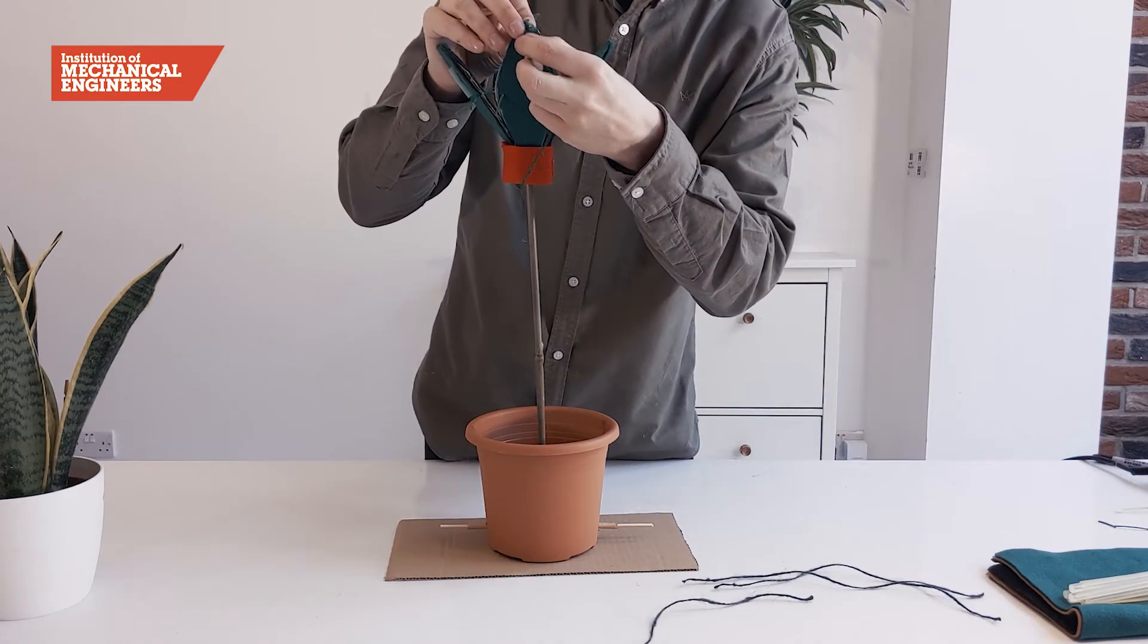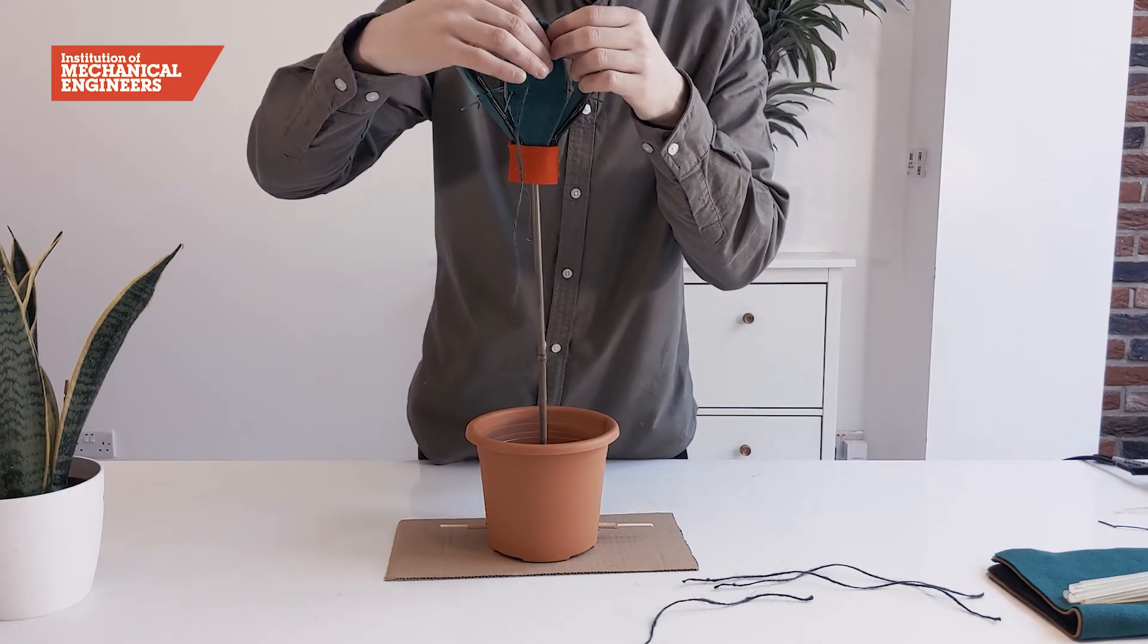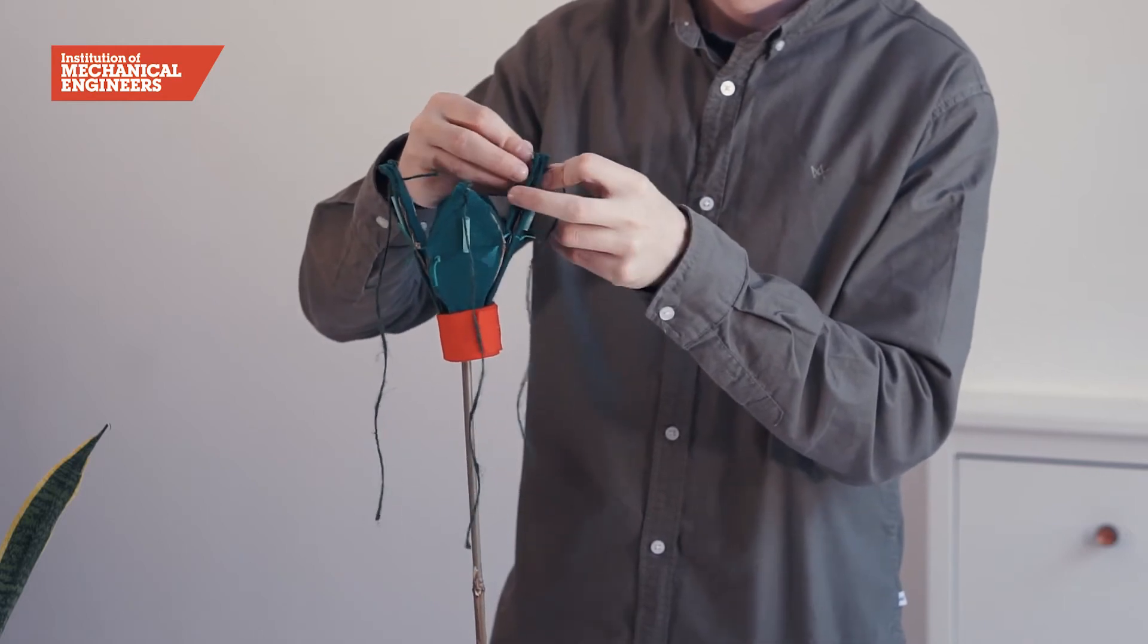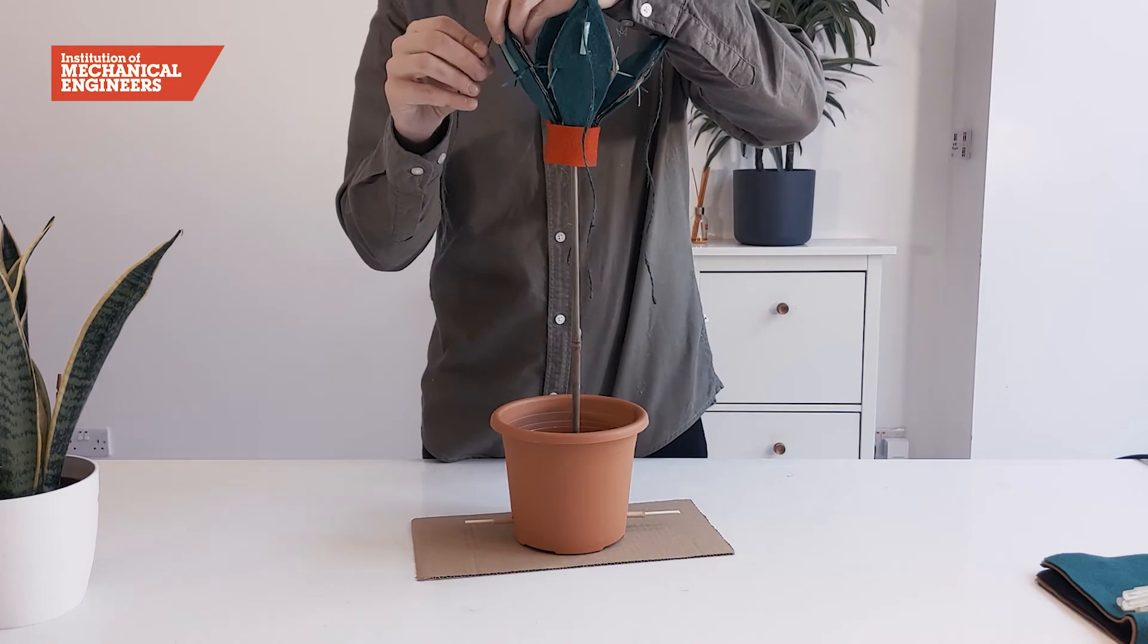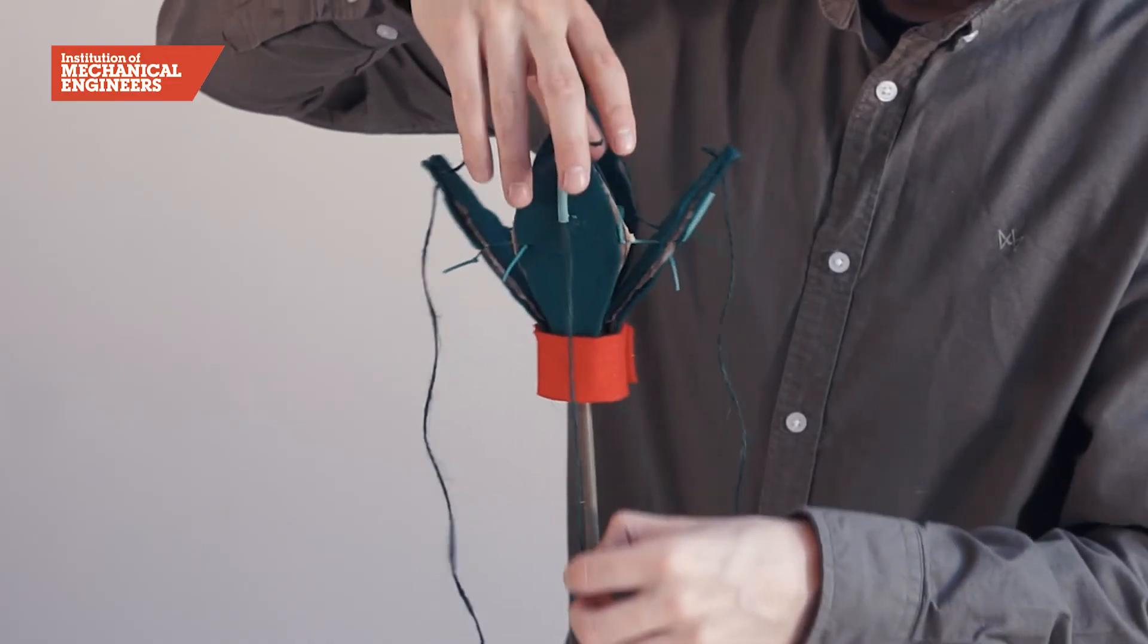To begin connecting the petals to the winch system, slide lengths of string through the slits in the tips of the petals and tie a knot to act as a stopper on each one. Then, thread each string through the straw on the petal.